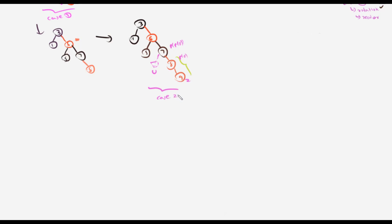In Case 2 we simply perform a left rotation at 7. After the rotation: 9 goes up, 7 goes down to the left of 8, and 8 becomes the subtree root. Case 2 always transitions to Case 3 — I explained that in the previous video. So after the rotation we move to Case 3.